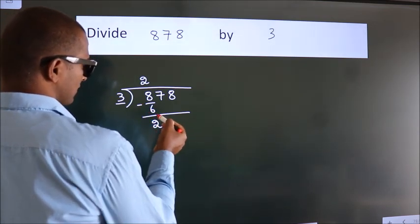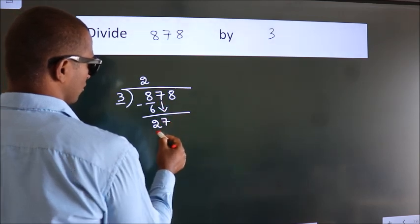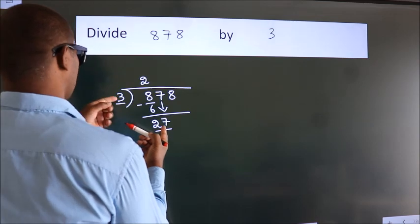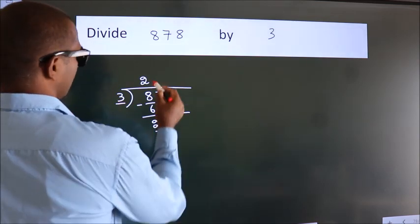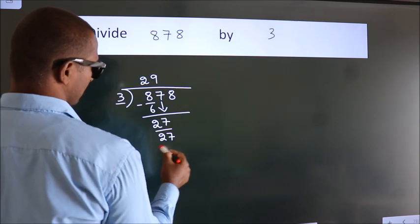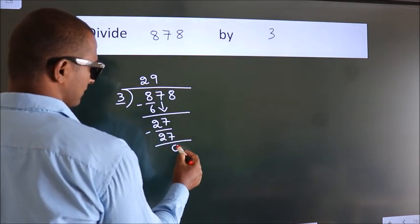After this, bring down the beside number. So 7 down, so 27. When do we get 27? In the 3 table, 3 times 9 is 27. Now we subtract. We get 0.